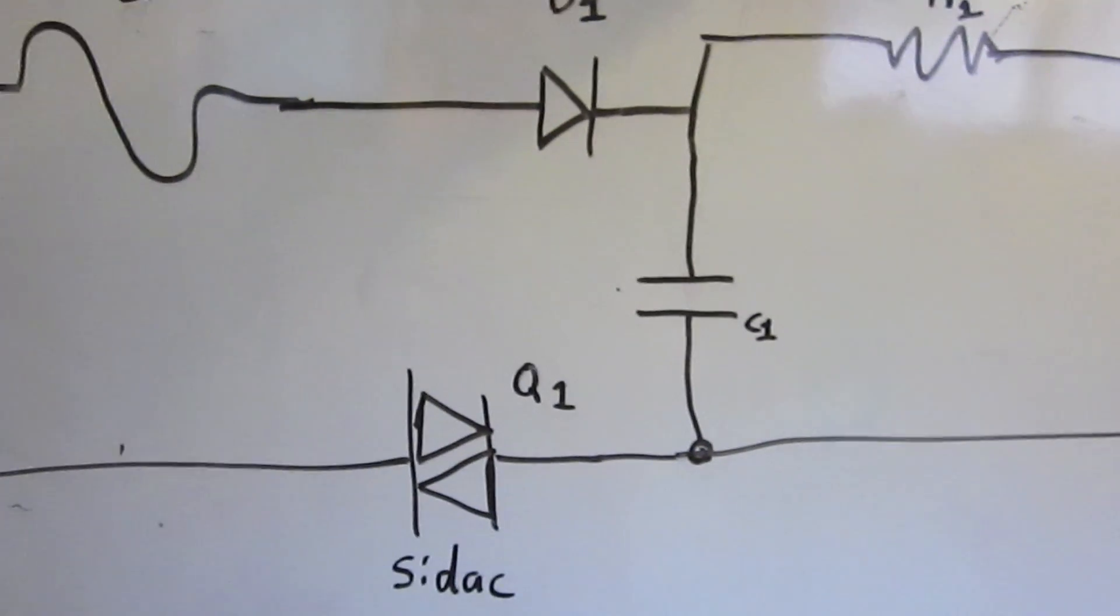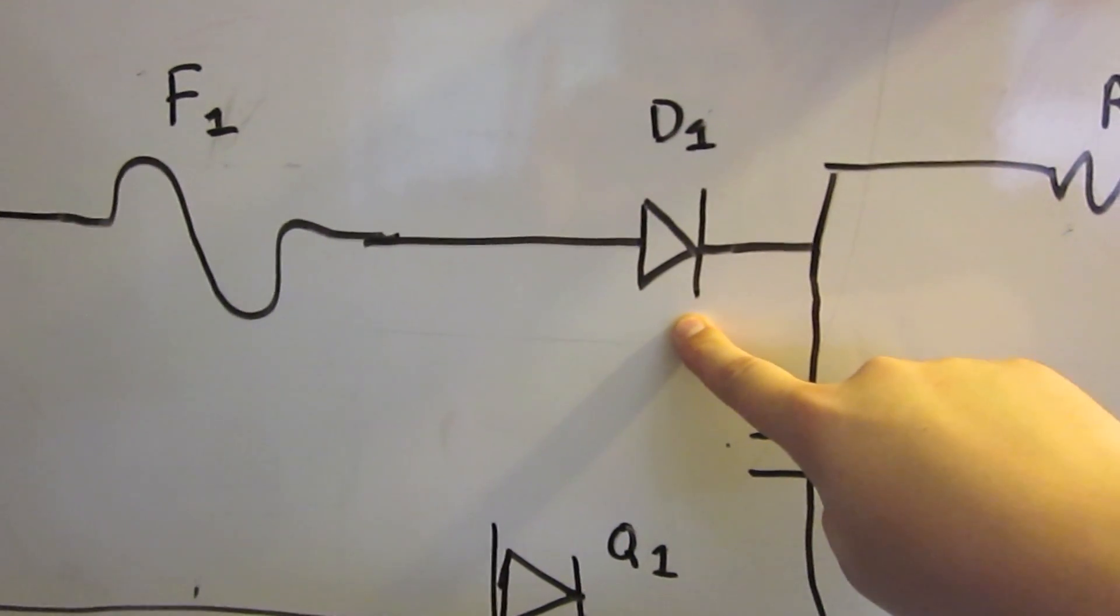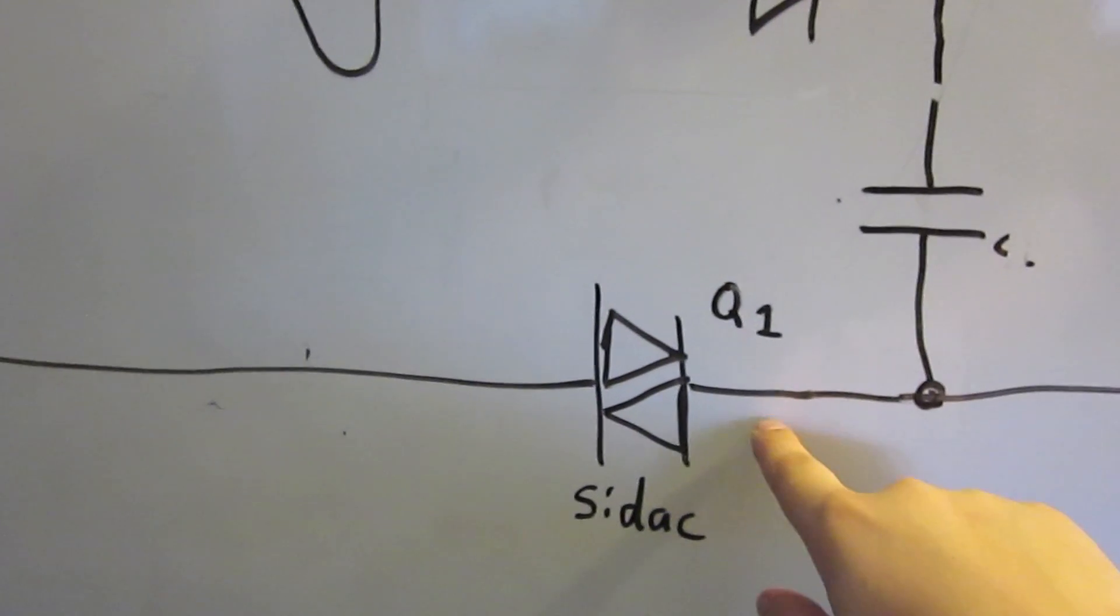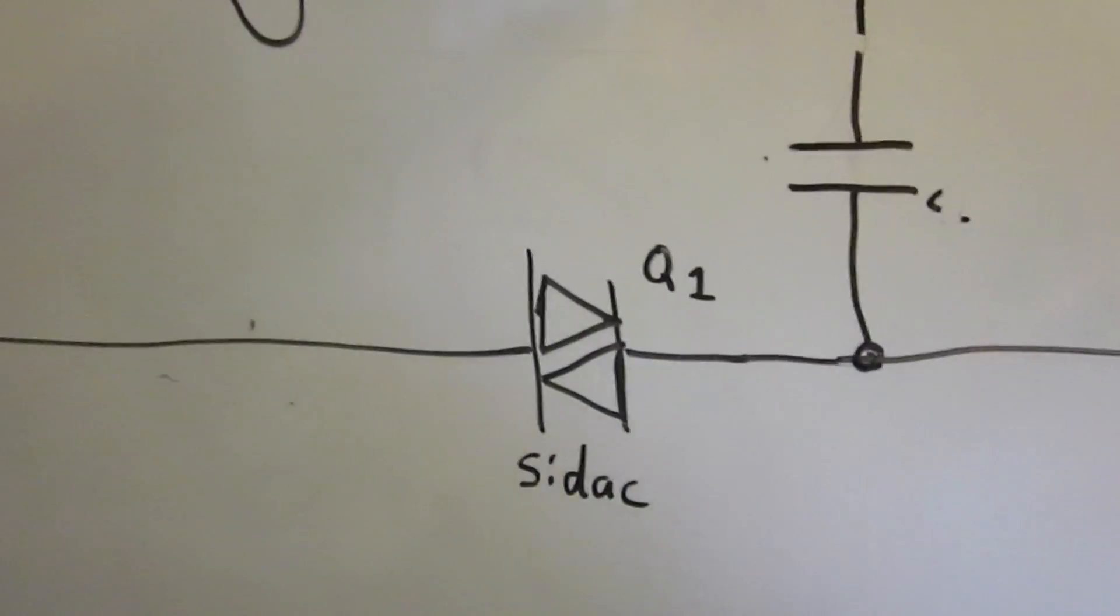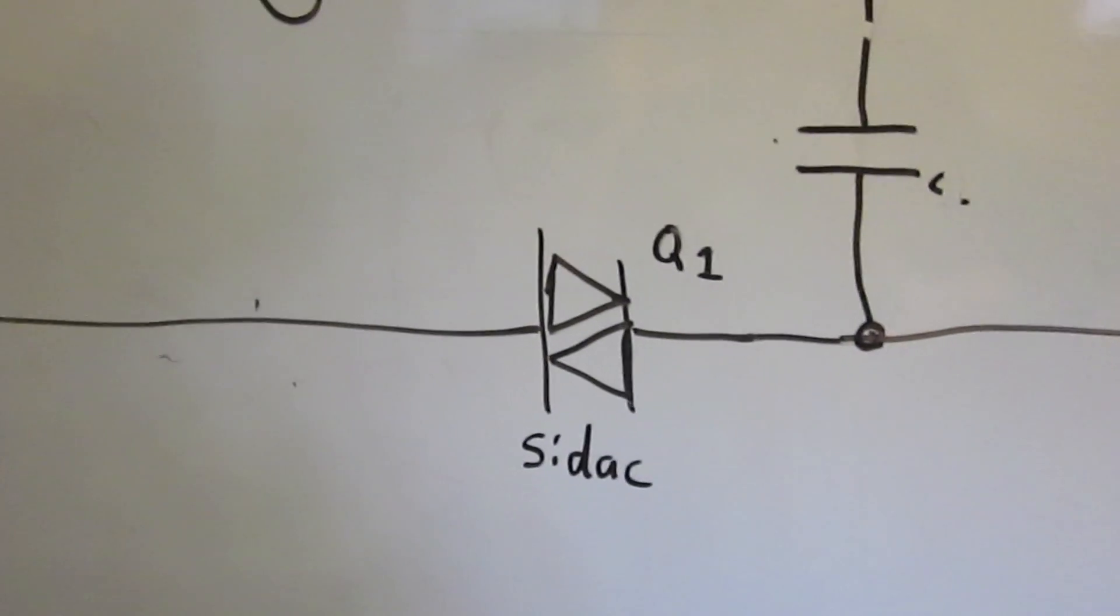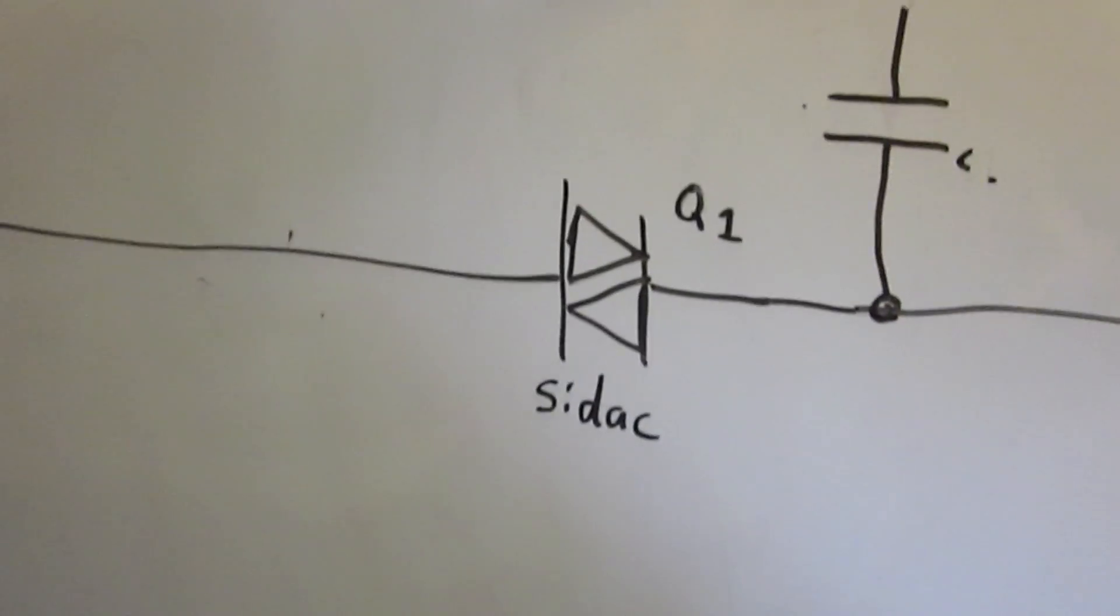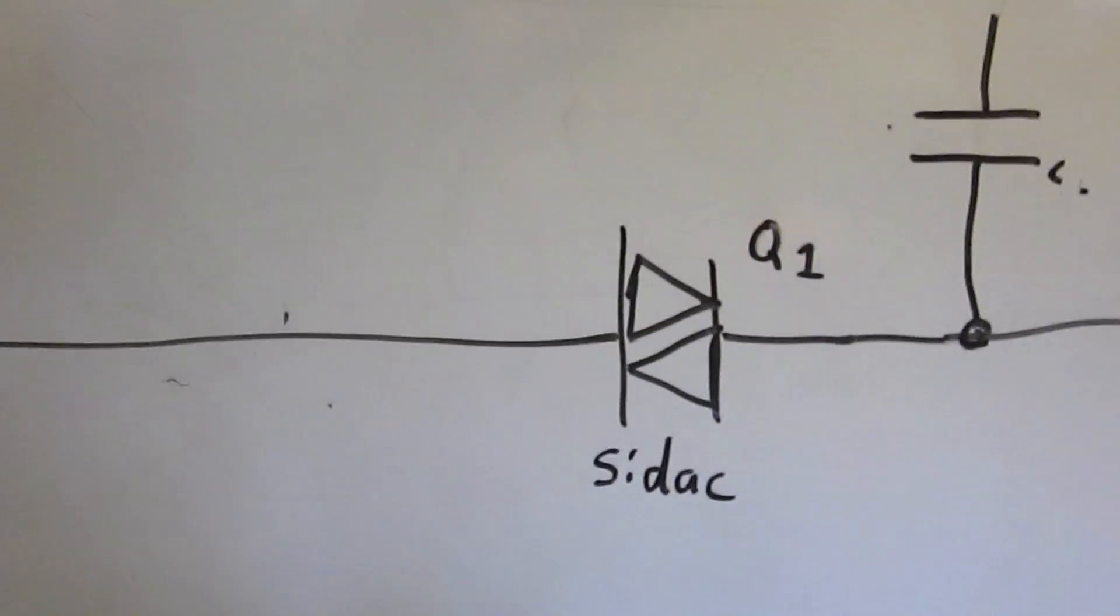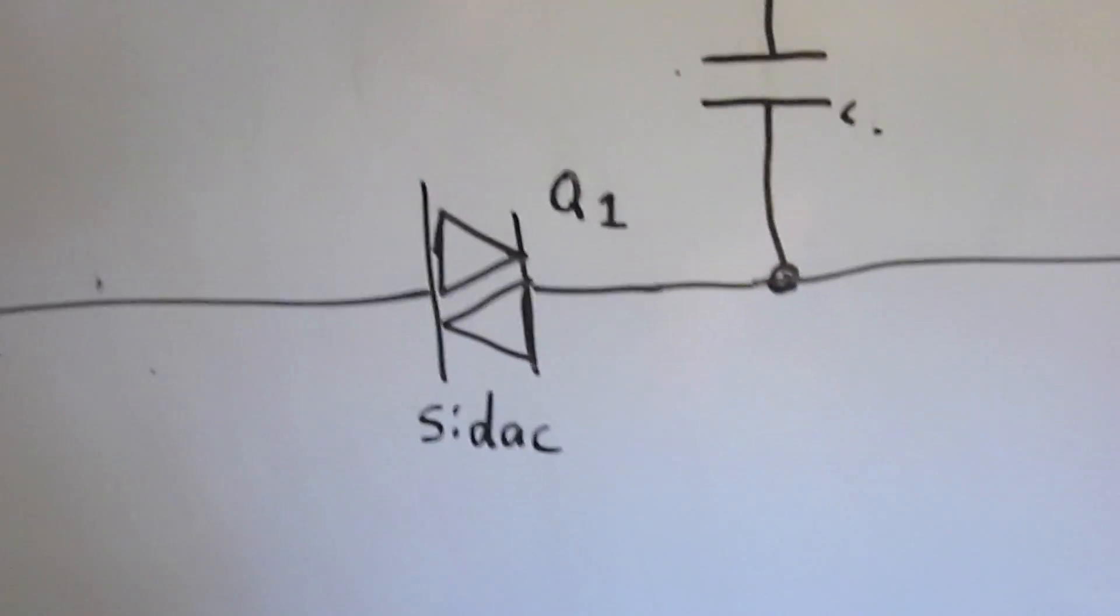So we have D1 here, which is just serving as a half wave rectifier. So the current can only come in this way. Capacitor. And a SIDAC. Now I looked this up. And the SIDAC is actually essentially a DIAC. It's a little more complicated than that. But for the purposes of this application, it may as well be a DIAC. A DIAC is essentially like a Zener diode for AC. It doesn't pass anything until a certain threshold is passed. At which point it allows essentially infinite current.